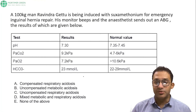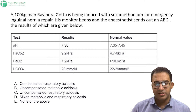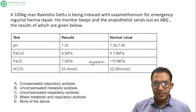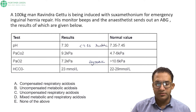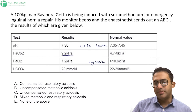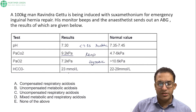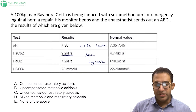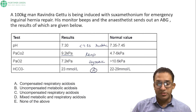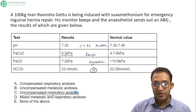A 100 kg man is being given suxamethonium for emergency induction. His monitor beeps and an ABG is sent. The patient is hypoxic — increase oxygen to 100%. pH is less than 7.35 — acidotic. PaCO₂ is extremely high — definite respiratory component. Bicarbonate levels are normal — there is absolutely no compensation. This is uncompensated respiratory acidosis, similar to the previous case. The patient is likely unable to ventilate adequately given the clinical scenario.